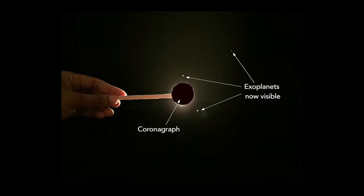This first activity, we demonstrate how chronography works. We have the lamp to represent visible light. And you should be able to see now with the chronograph in front of the star, you should be able to see the exoplanets.